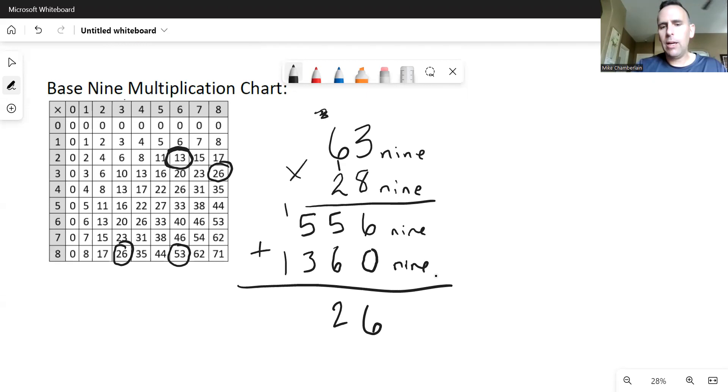And then five plus three plus one. Five, six, seven, eight, one, zero. And then one and one is two. So final answer, two, zero, two, six.